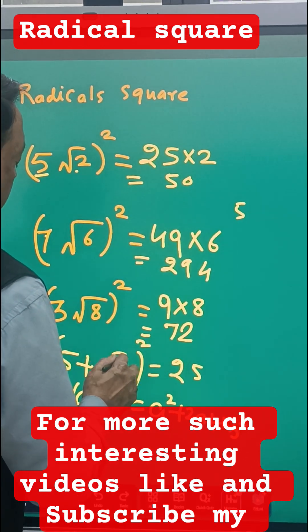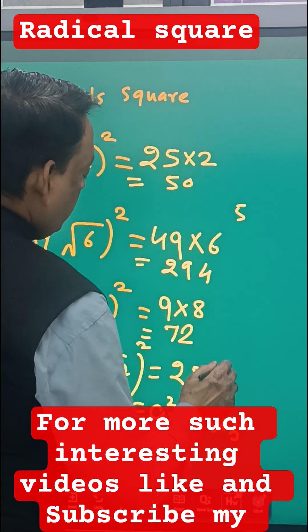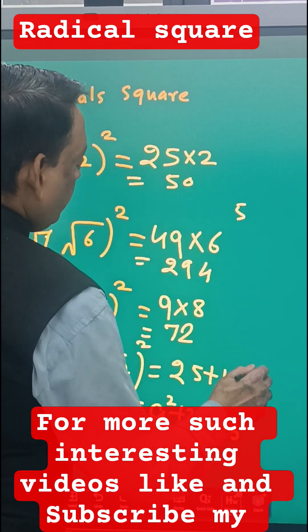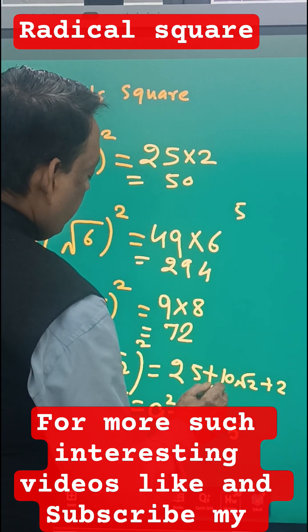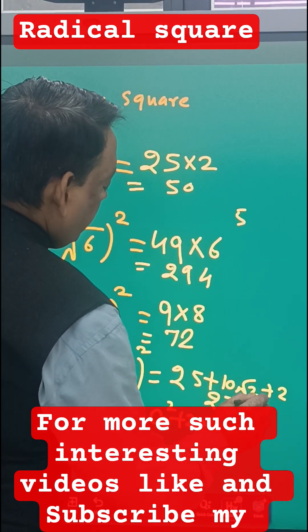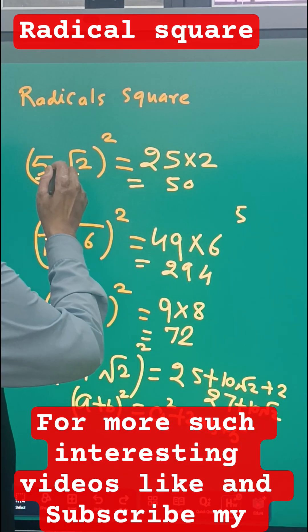And then we have root 2 ka square, that becomes 2. So 25 plus 2, 27. So 27 plus 10 root 2. So this rule is only for when there is a multiplication in between.